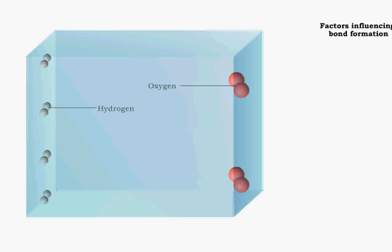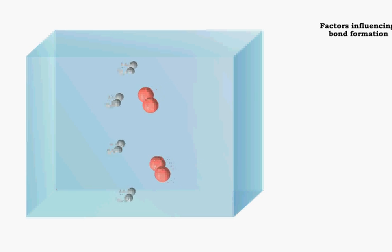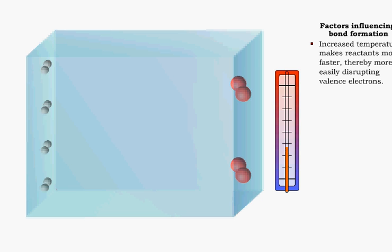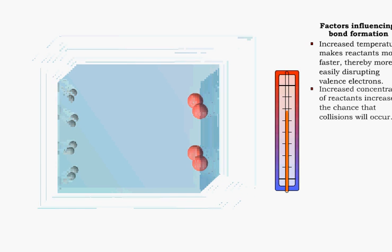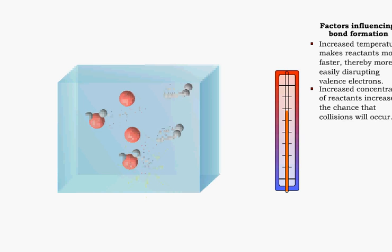Two factors increase the energy available for activation. Increasing the temperature of a solution gives the reactants more kinetic energy, increasing the force of collision, making it easier to disrupt the valence electrons. Increasing the concentration of the reactants increases the chance that a collision will occur.